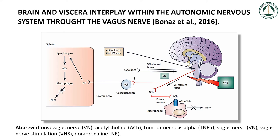Brain and viscera interplay within the autonomic nervous system where the vagus nerve, containing approximately 80% afferent and 20% efferent fibers, plays multiple key roles in homeostatic regulations of visceral functions. Recent data have suggested the anti-inflammatory role of the vagus nerve. This vagal function is mediated through several pathways, some of them still debated. The first one is the anti-inflammatory hypothalamic-pituitary-adrenal axis, which is stimulated by vagal afferent fibers and leads to the release of cortisol by the adrenal glands. The second, called the cholinergic anti-inflammatory pathway, is mediated through vagal afferent fibers that synapse onto enteric neurons which release acetylcholine at the synaptic junction with macrophages.